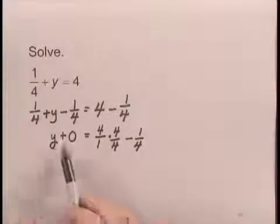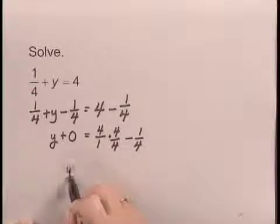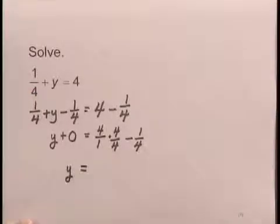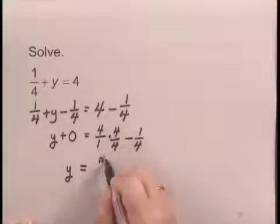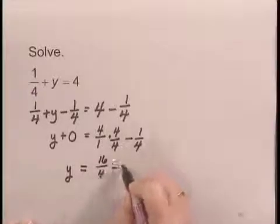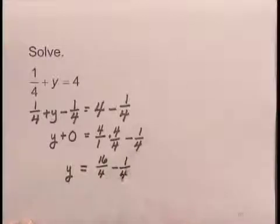Back over on the left side of the equation, y plus 0 is y. And on the right side of the equation, multiplying 4 over 1 by 4 over 4, I get 16 over 4 minus 1 over 4.